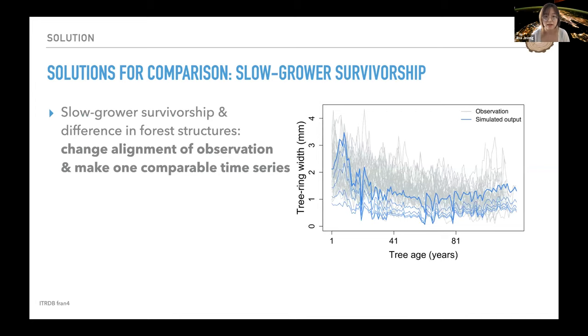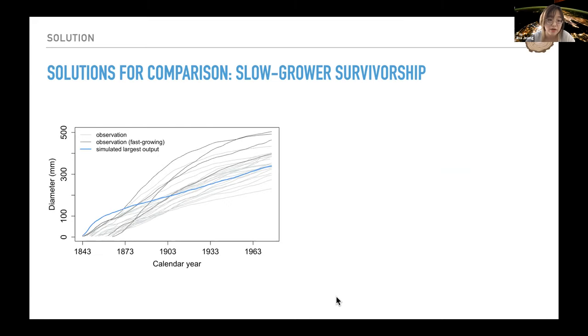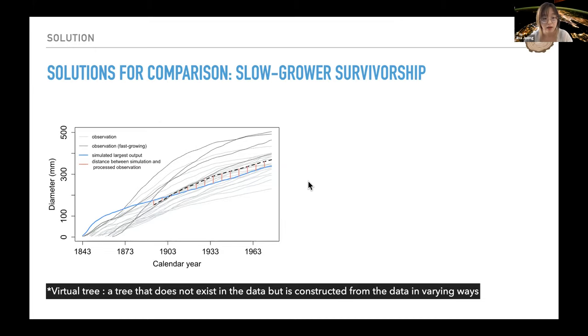After adjusting the data alignment, we can make one comparison time series by calculating the annual mean, max, or average. For example, this diameter aligned by the calendar year, the annual average was calculated, but only later decades were used to avoid the bias from the survived slow growers. By compiling this one time series that does not exist in the data set, marked as the dotted black line, we could extract the information and we can make a comparison between observation and simulation as shown in the distance between them.